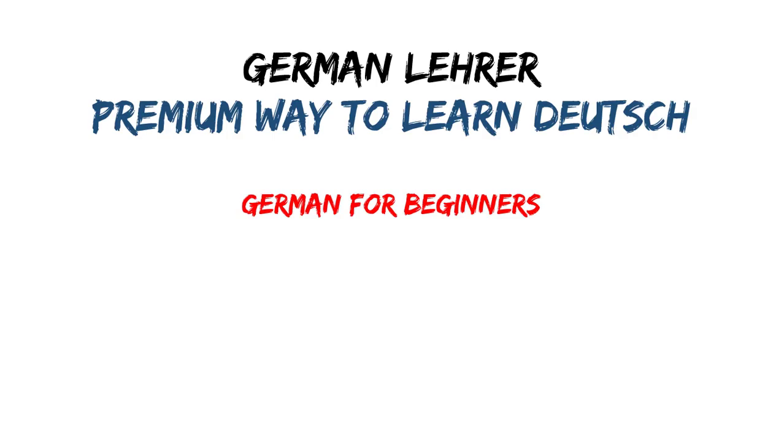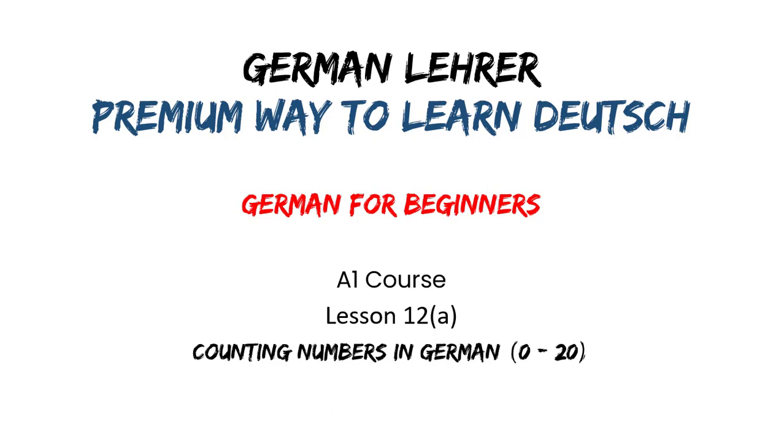Hello and welcome to German Ladder, a premium way to learn Deutsch. In this German for Beginners A1 course lesson 12A, we are going to learn the counting numbers in German from 0 to 20, or in German von null bis zwanzig. I'm your mentor Joseph Wolt, will be with you and together we will try to learn.